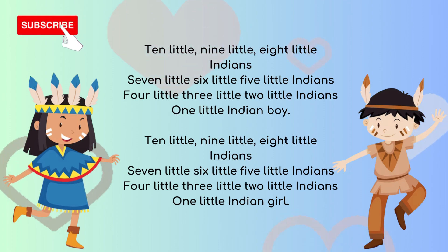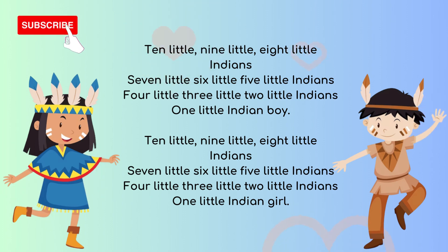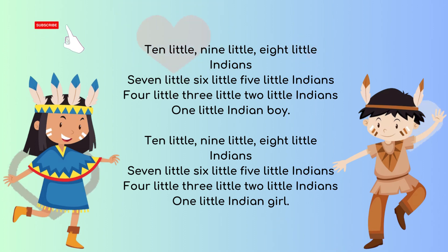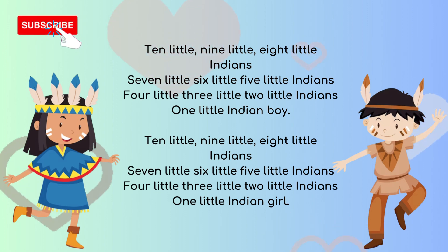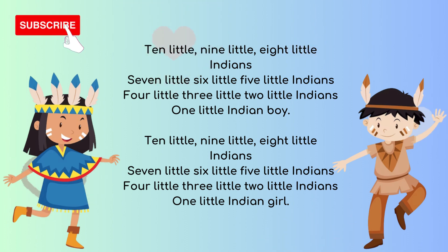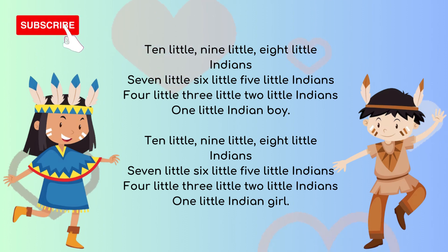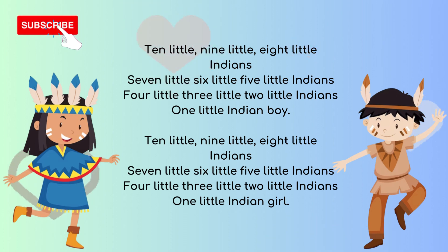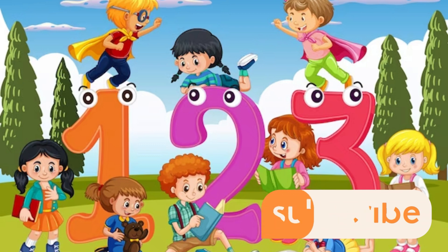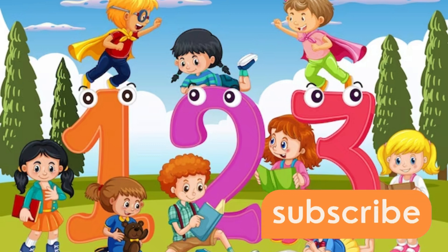Ten little, nine little, eight little Indians. Seven little, six little, five little Indians. Four little, three little, two little Indians. One little Indian boy. Sing — ten little, nine little, eight little Indians. Seven little, six little, five little Indians. Four little, three little, two little Indians. One little Indian girl.